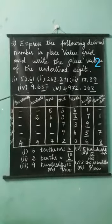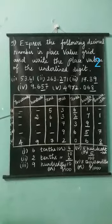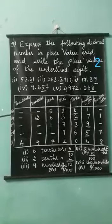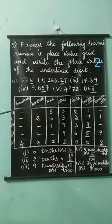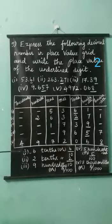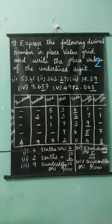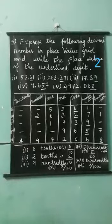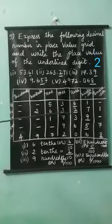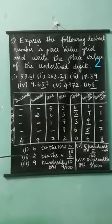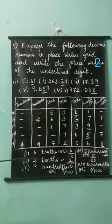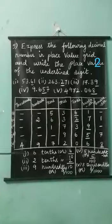Now, write the underlined digits. Where is the underlined number? Six is the underlined number. Where is the place? The value of the underlined number six is in tenth place, so we write six-tenths or six by ten. Then, second one: the underlined number is two, and two is in tenth place, so the number is two-tenths or two by ten.